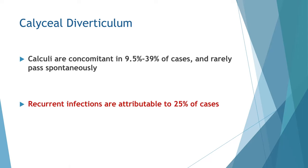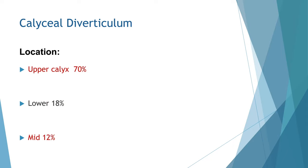Calculi are concomitantly found in approximately 10-40% of cases and rarely pass spontaneously. In these patients, recurrent infections are attributable to about a quarter of cases. Most diverticula are located in the upper calyces approximately 70% of the time.